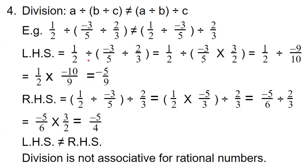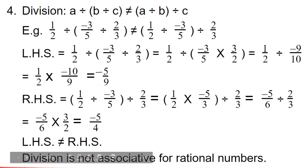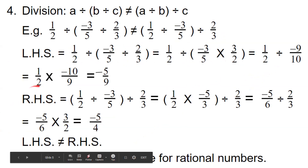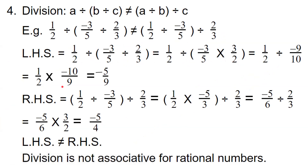LHS is equal to 1/2 divided by, in the bracket we have the last two rational numbers. It is division, so we change into multiplication. 1/2 divided by (minus 3/5, division changing into multiplication, reciprocal is 3/2). This is equal to 1/2 divided by minus 9 upon 10. That is equal to 1/2, again division changing into multiplication, reciprocal is minus 10/9. So 2 can be cancelled with numerator 10, leaving minus 5/9.